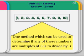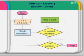One method which can be used to determine if any of these numbers are multiples of 3 is to divide by 3. A flowchart could be used to determine if the number is a multiple of 3. We input the numbers and then divide by 3 and ask, Is quotient an integer? If it is an integer, then we place it in the event. If it is not an integer, then we keep repeating the process until all the numbers have been through the division.